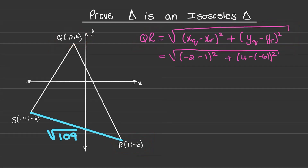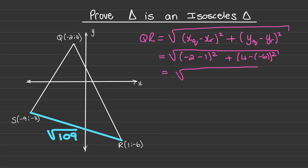When I substitute, I have (−2 − 1)² + (4 − (−6))², which is equal to 3² + 10², and that is also equal to the square root of 109.